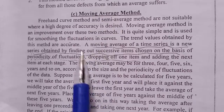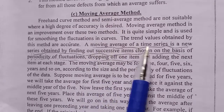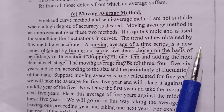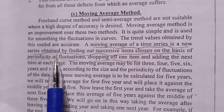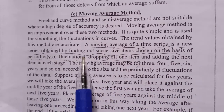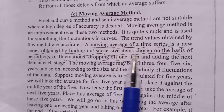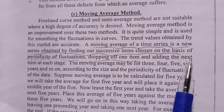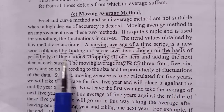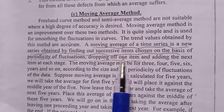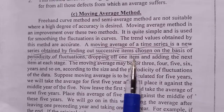Moving average of a time series is a new series obtained by finding out successive items chosen on the basis of periodicity of fluctuations, dropping off one item at each stage.